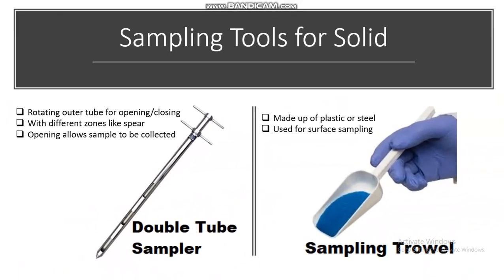The double tube sampler has a rotating outer tube used for opening and closing different parts with different zones, similar to the spear sampler. The opening allows the sample to be collected, and it can be closed to prevent contamination or cross-contamination.